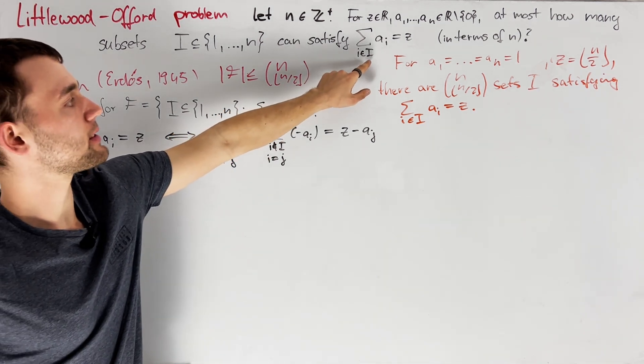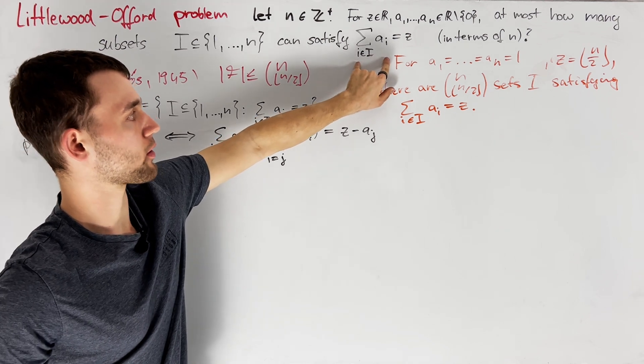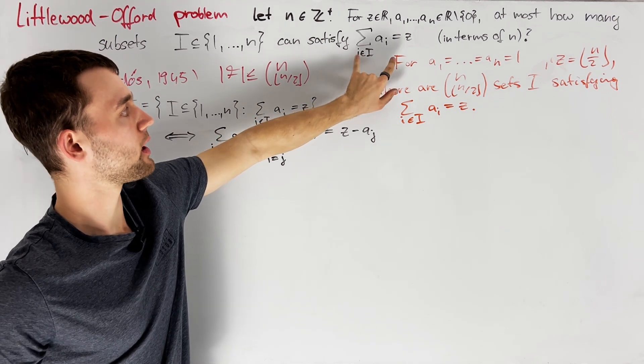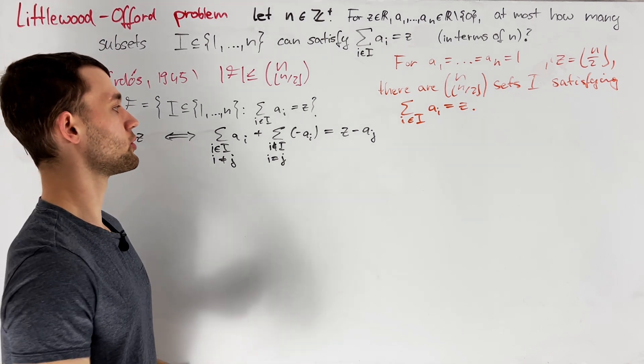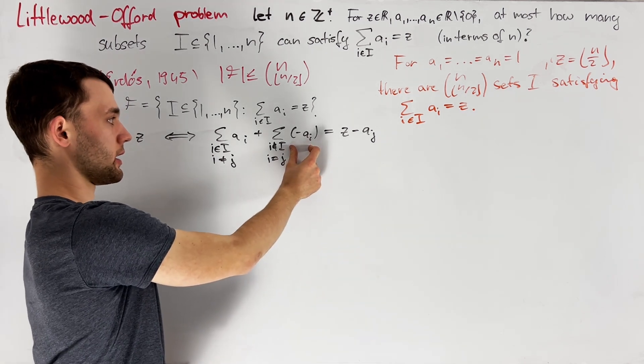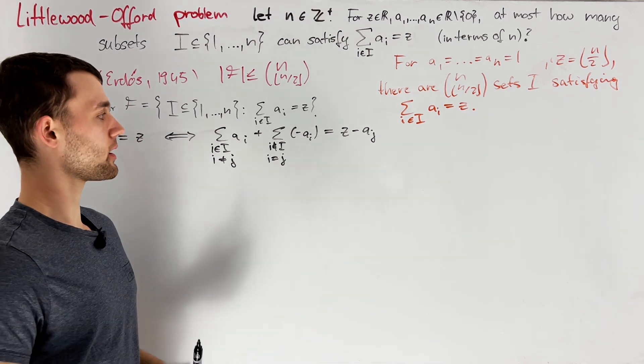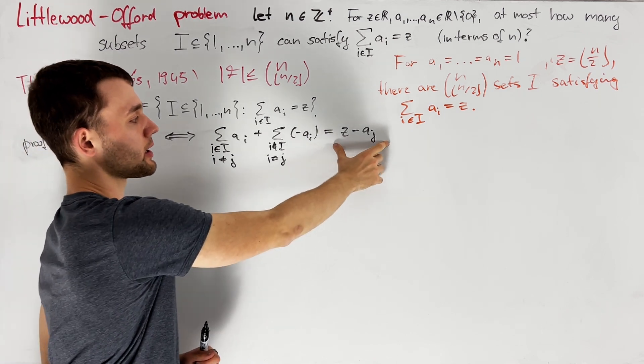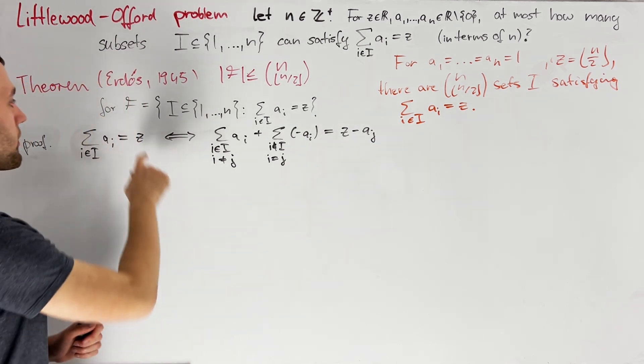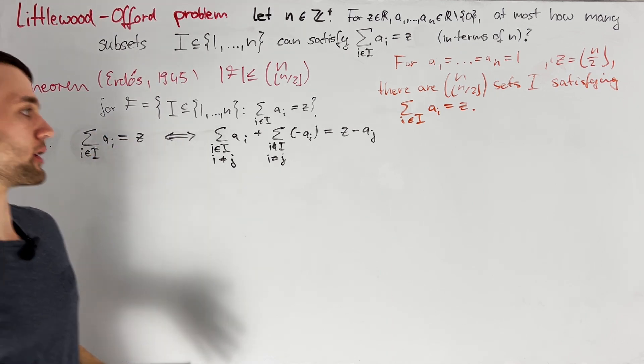Namely, if j already lies in i, then we are no longer going to have a contribution of aj here. And if j doesn't lie in i, then we will have a contribution of minus aj. The key takeaway here is that we may flip the signs of the ai and if we then adjust z accordingly, the size of our set F is going to stay invariant.